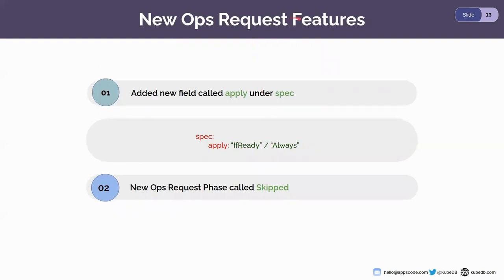Now let's see the new OpsRequest features. We have a new field called apply under the spec. Using this field, you can control the execution of the OpsRequest. If you provide apply as 'IfReady', the OpsRequest will only be applied if the database is in a ready state. But if you want the OpsRequest to be applied irrespective of the database phase — like if it's critical — you can provide the apply field as 'Always', and it will apply no matter what.